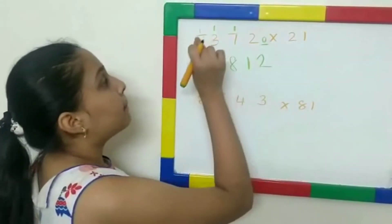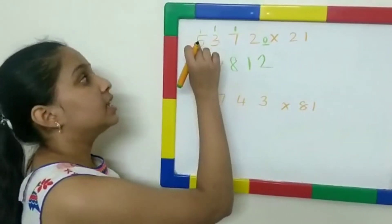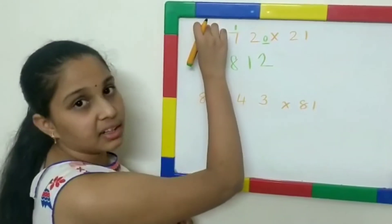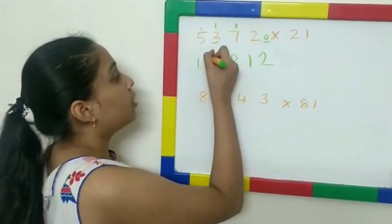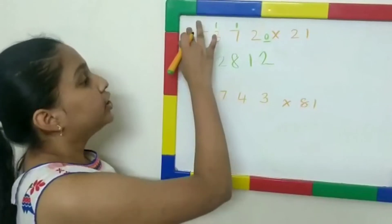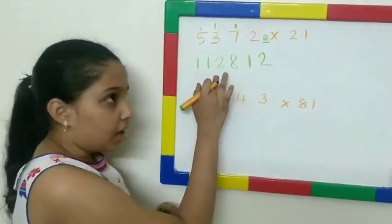Next, 2 multiplied by 5 is 10. 10 plus 1 is 11. Now, write the whole number down, since we don't have any number left. So, this will be the right answer.